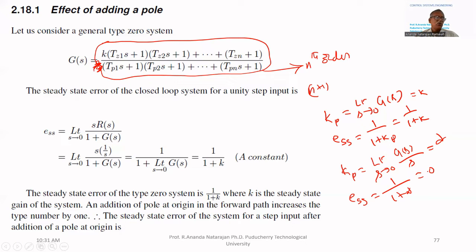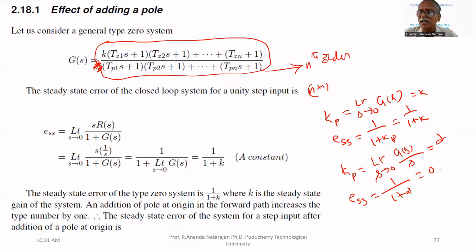If you add a pole at origin to the type zero system, the order is increased and at the same time the position error becomes zero — no steady state error. If you add a pole at origin, what is 1/s? 1/s is an integrator.